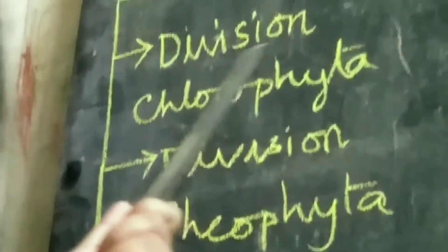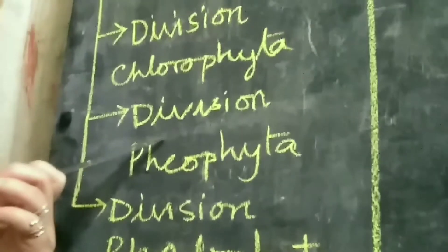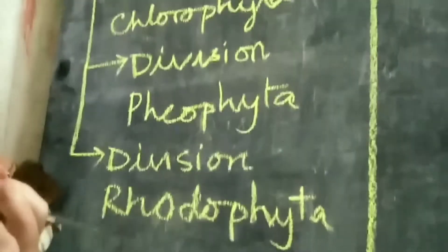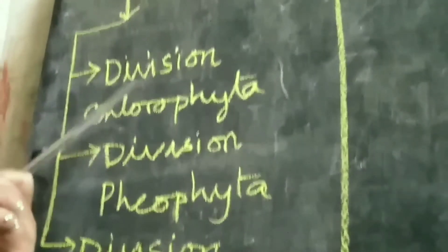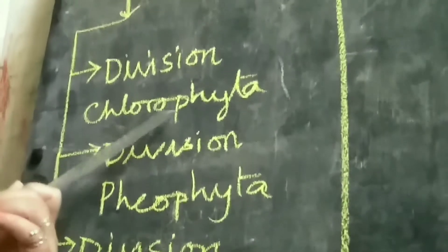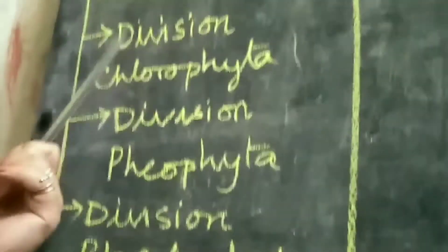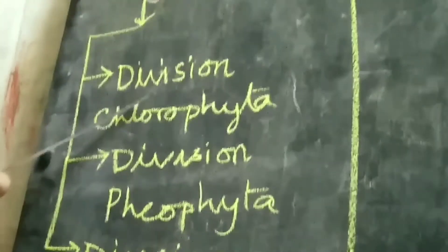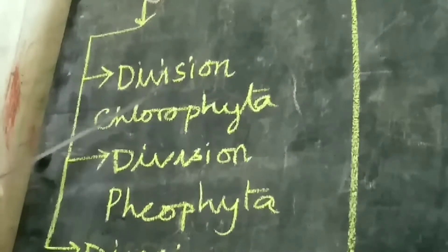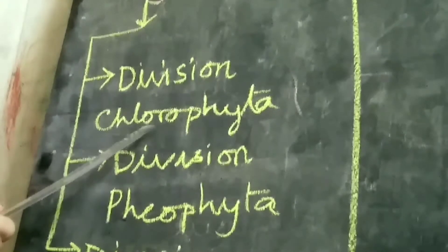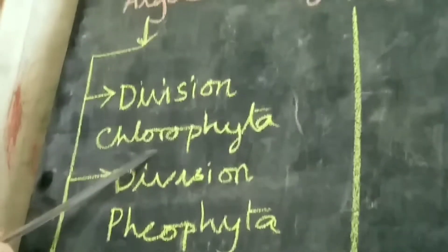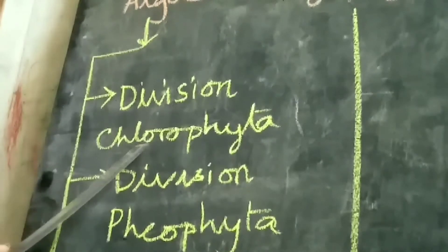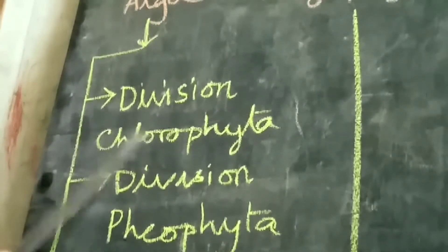Algae are divided into three main divisions. First division is Chlorophyta, second is Phaeophyta, third is Rhodophyta. Chlorophyta — from the name, chlorophyll must be the photosynthetic pigment. They are commonly called green algae. Major photosynthetic pigments are chlorophyll A and B. Reserved food is starch, present in the pyrenoid. Examples are Chlamydomonas, Volvox, Spirogyra, and Ulva.